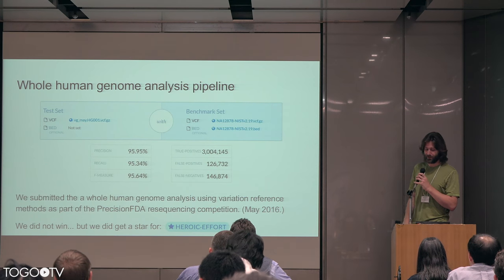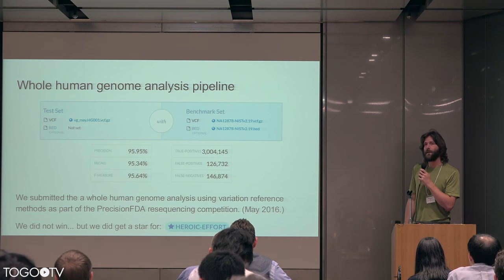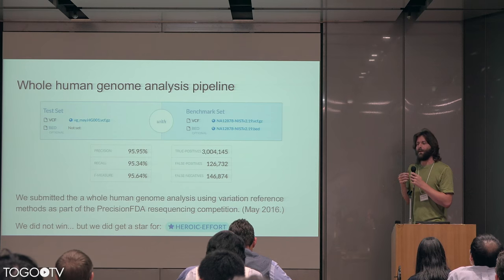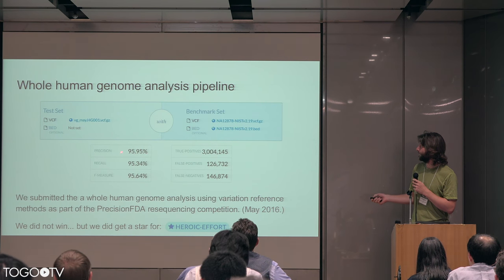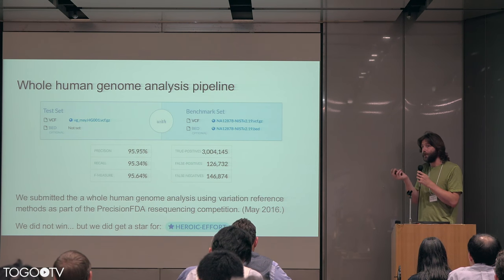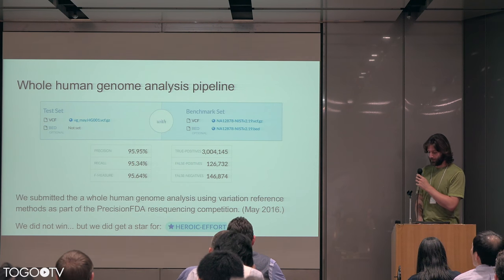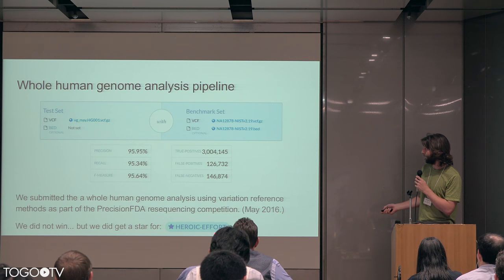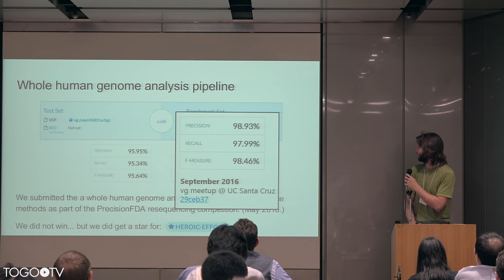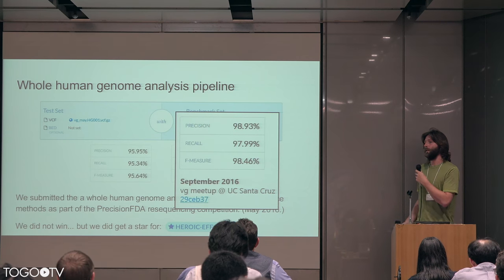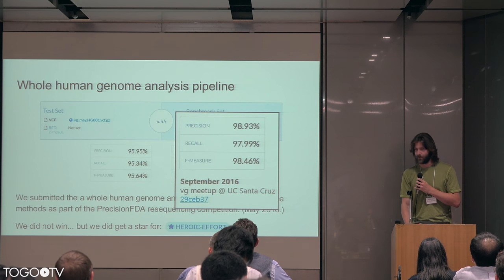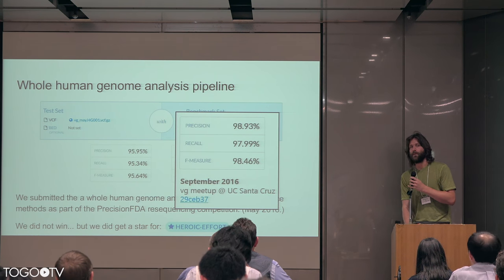We participated in the Precision FDA challenge, where there was a sample we were supposed to analyze using some method. We did very poorly initially — getting F scores around 95.6%, while most methods are in the two or three nines range. We had a lot of bugs, but we got a star for heroic effort because it took a heroic amount of compute to make it work. This was in May 2016. By September 2016 — about a year ago — we were able to improve significantly: it runs faster and we're getting close to a 99% F measure. There are more bugs to solve, but the method is becoming more tenable.